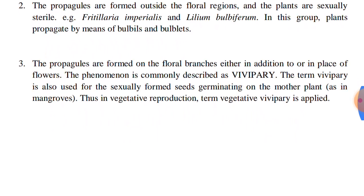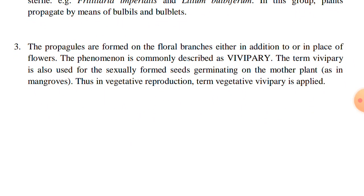The third category: the propagules are formed on the floral branches either in addition to or in place of the flowers. This phenomenon is commonly described as vivipary. The term vivipary is also used for sexually formed seeds germinating on the mother plant, as in the case of mangroves. Thus, in vegetative reproduction, the term vegetative vivipary is applied.